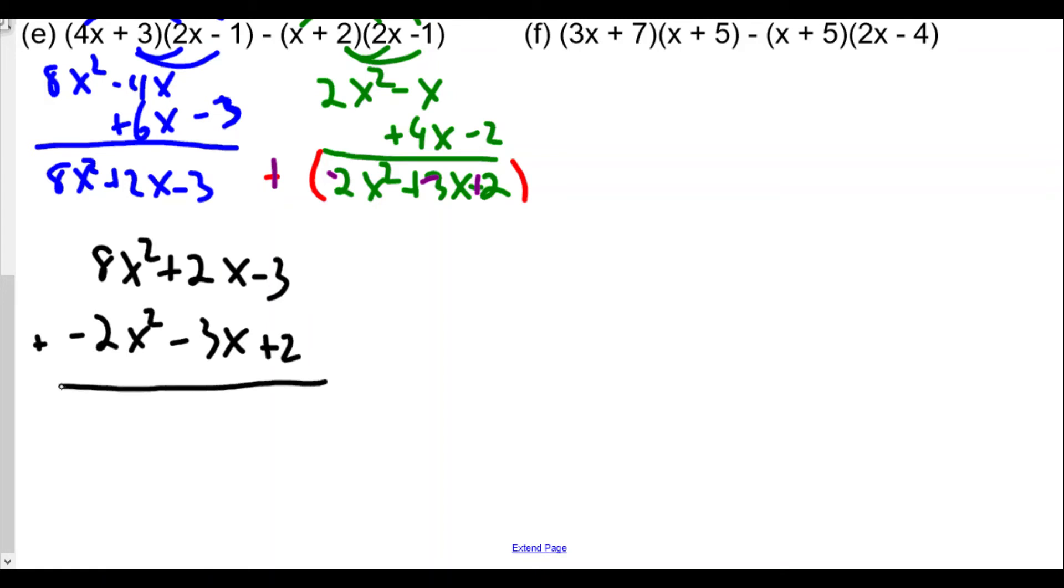When subtracting an entire trinomial, multiply by negative 1 and turn it into an addition problem. Subtracting is the same as adding the negative. So we add together: 8x squared becomes 6x squared, 2 plus negative 3 is minus x, and negative 3 plus 2 is minus 1. This is the final trinomial for letter E.